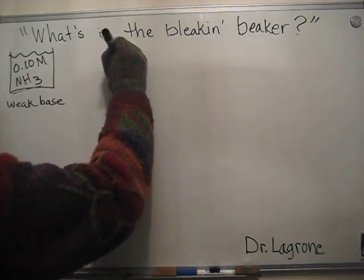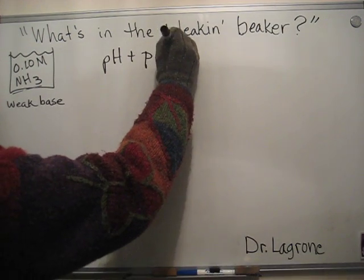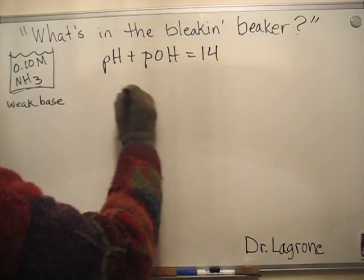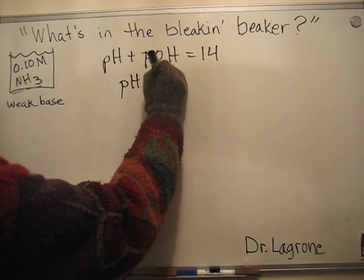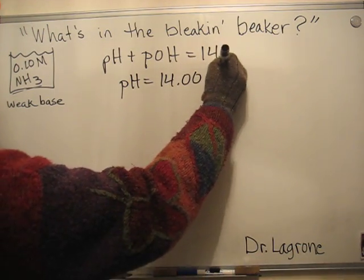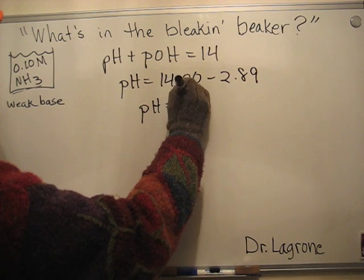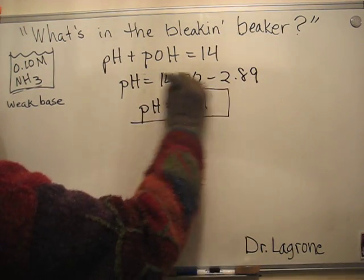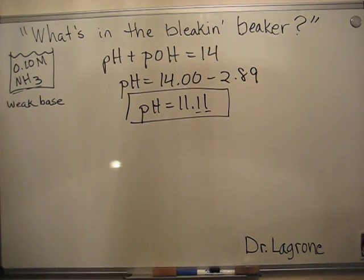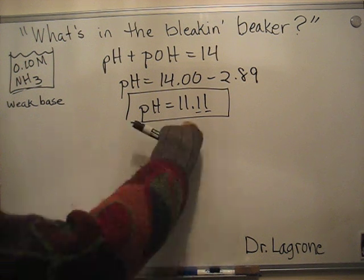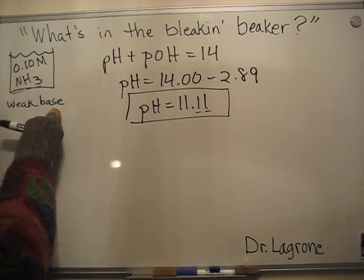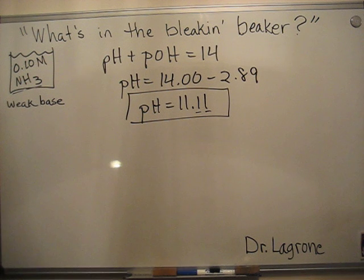You would plug into pH + pOH = 14, so the pH is going to equal 14 - 2.89, so the pH is going to equal 11.11. Remember, this is still two sig figs, and that makes sense because ammonia is a weak base, so the pH should be greater than seven. And that's how to do what's in the bleakin' beaker.